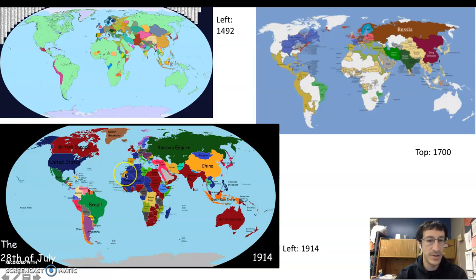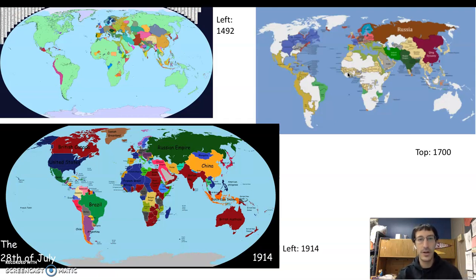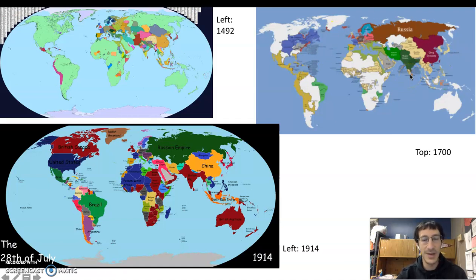By 1914, the map looks dramatically different — you can see who is in control or at least determining outcomes in certain areas. Almost all of Latin America is now free and independent, but Africa is almost completely under European control or subjugated, as is much of Asia, which had not been the case 200 years prior. We'll focus on what happened in Asia and Africa throughout this chapter.